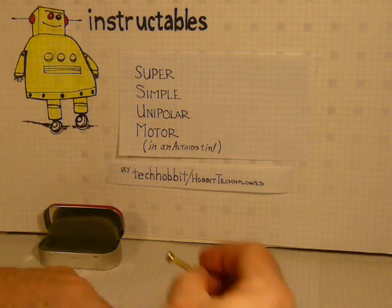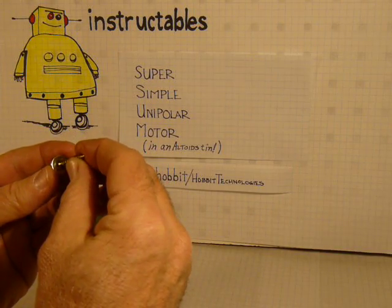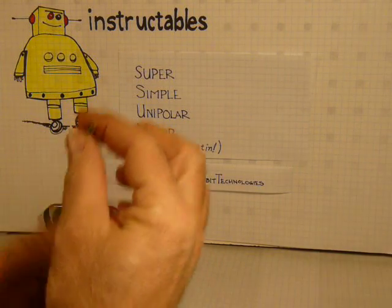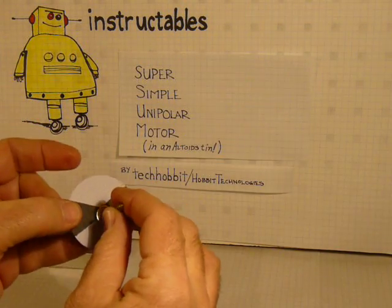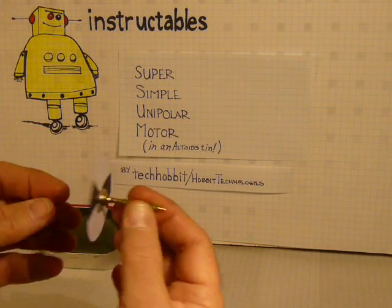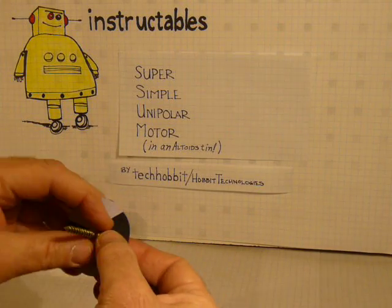And what we're going to do is place a magnet on the head of the screw, center it somewhat. I've also made a little round disc, but it doesn't fit in my tin, to help observe the motion of our little motor. We'll get that on there about centered.